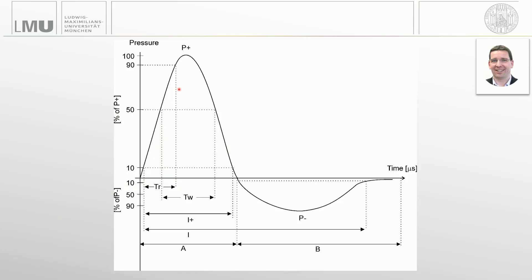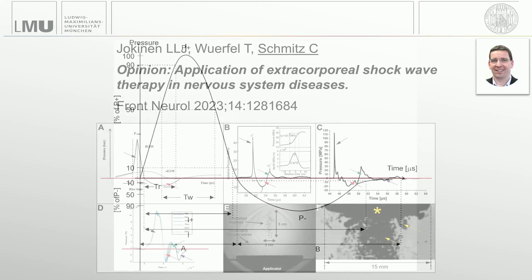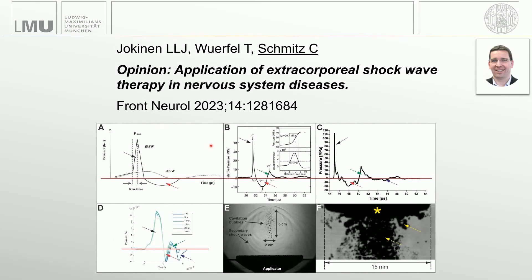Shockwaves are characterized as pressure as a function of time — single acoustic pulses with a certain peak positive pressure, a certain peak negative pressure, and the area under the curve is actually the energy density. In this publication, we put a lot of the theory together. You can see here measured focused shockwaves from available devices, and this is the pressure versus time function of the Dollar Class radial shockwaves.